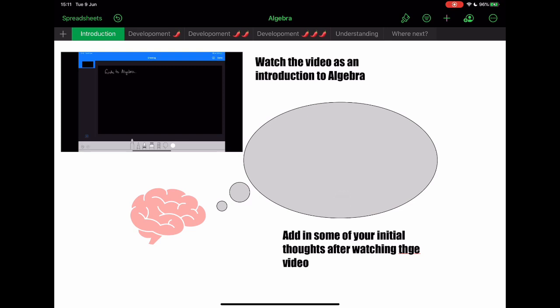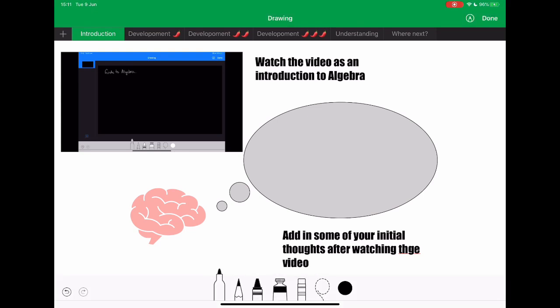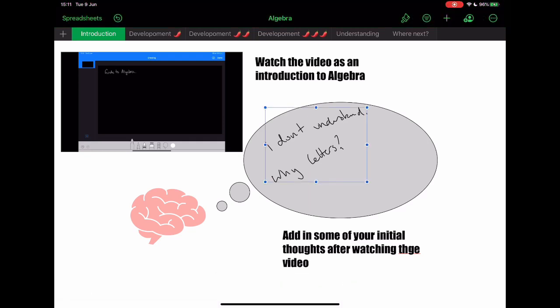Now I've got an Apple Pencil. So if I was to do this as a learner, I could say, I don't understand it, whatever it might be. You know, you can just instantly kind of just put out your ideas or you might have some questions. Why letters? Because this is on equations, algebra, sorry. So that just adds that in. That's just my initial thoughts before I go into anything.